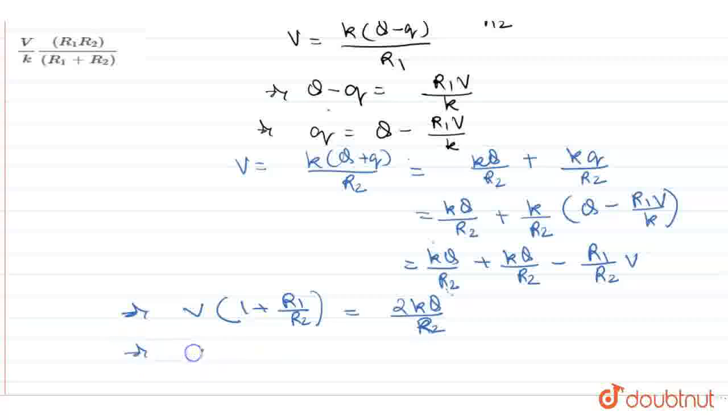So V(R1 + R2)/R2 = 2kQ/R2. The R2 terms cancel, giving V = 2kQ/(R1 + R2).